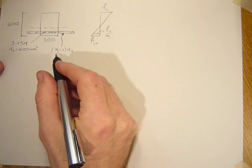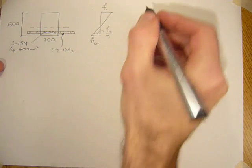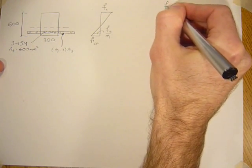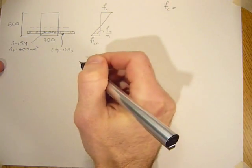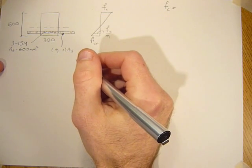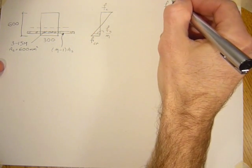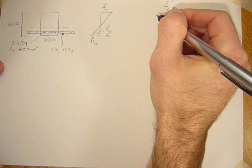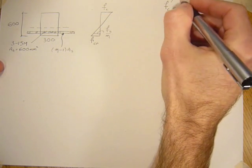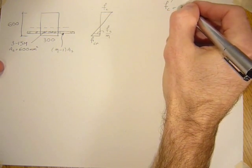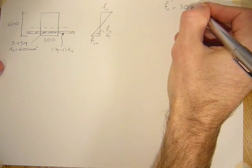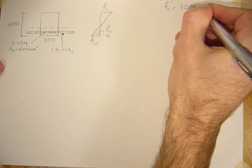So to get the n value, we have to find out what the modulus of elasticity of the steel and concrete are. The modulus of elasticity of the concrete can be determined from the 28-day compressive strength of the concrete.